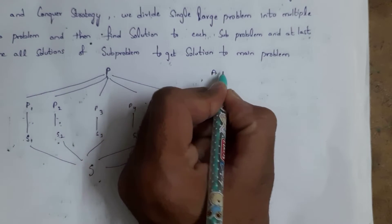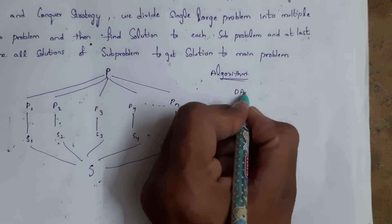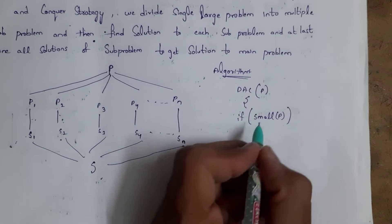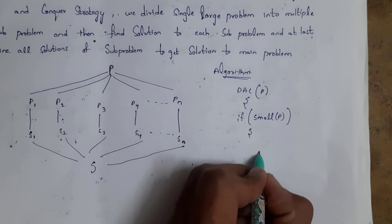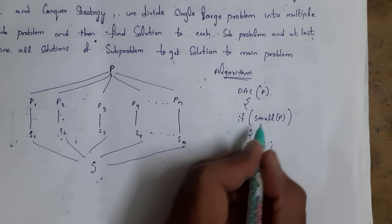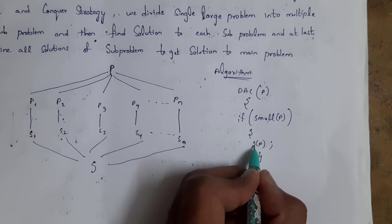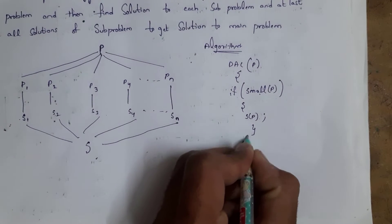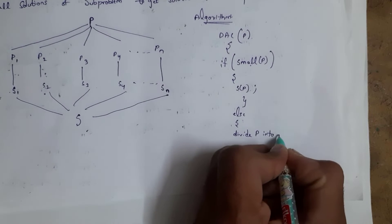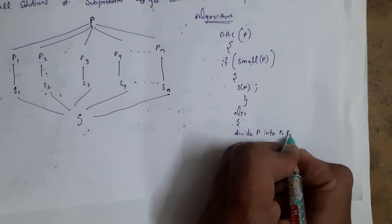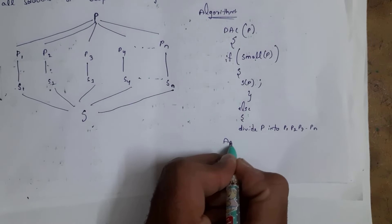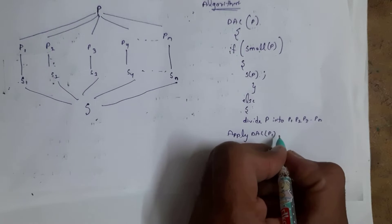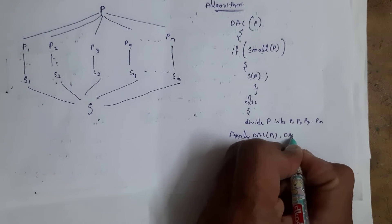Now I will write the algorithm for divide and conquer strategy. If the problem is small, then we can write the solution directly. Else if the problem is large, then divide the problem into multiple sub-problems: P1, P2, P3, and so on up to Pn.